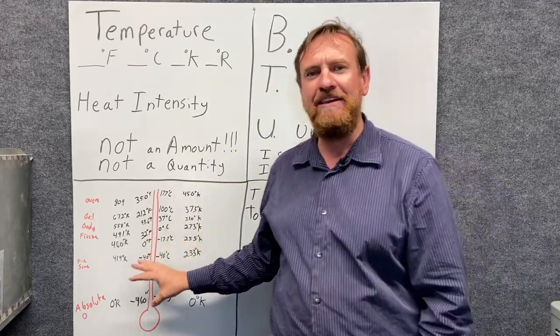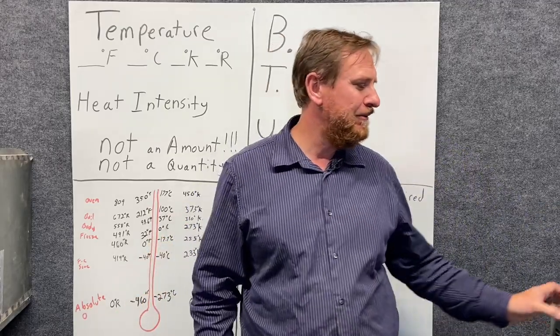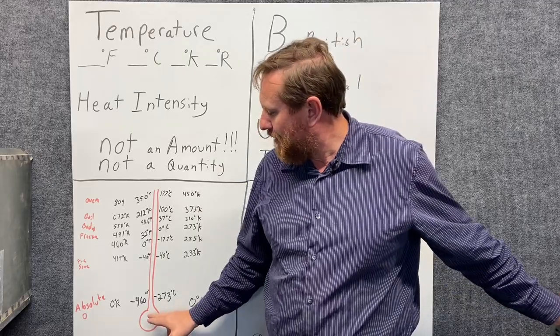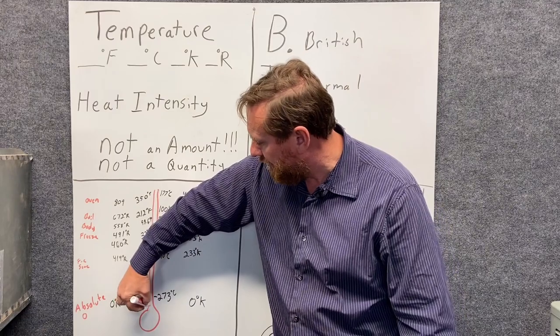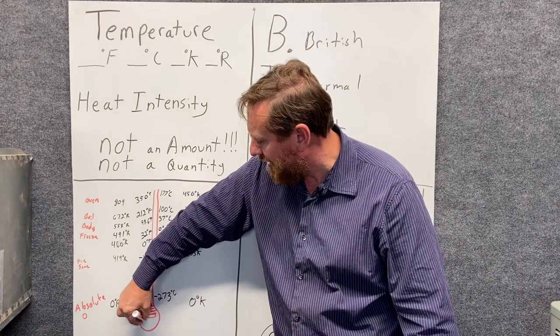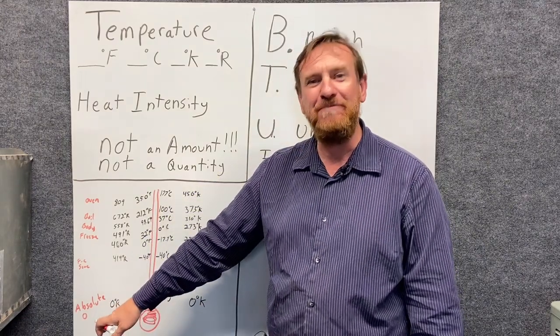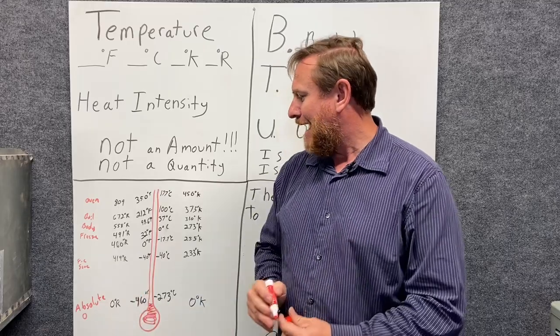Now that we understand that concept, let's apply this a little bit more and go a little more in depth. We're going to have our thermometer right here. And let's say that we're at the very lowest point. Ludacris always asked, how low can you go? Absolute zero. That's how low you can go.